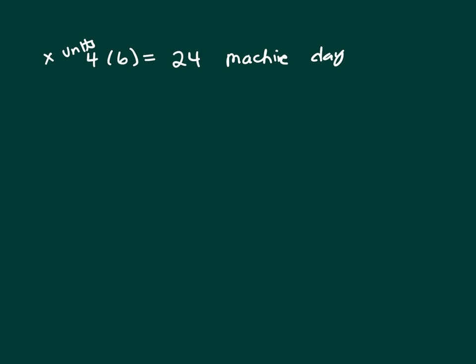Well, what if we want to produce 3X units? Well, 3X units would be three times 24 and that's 72 machine days.